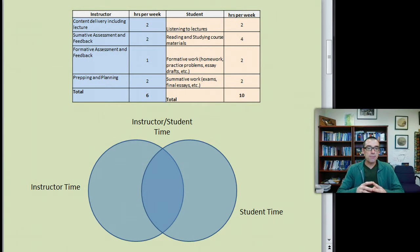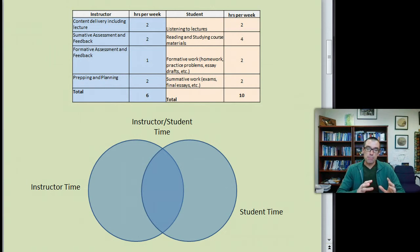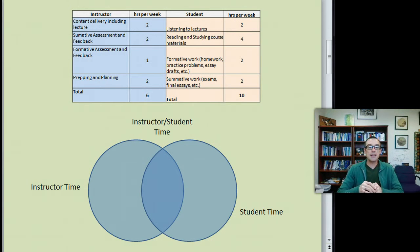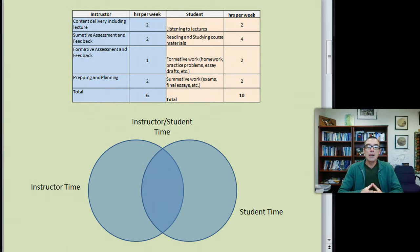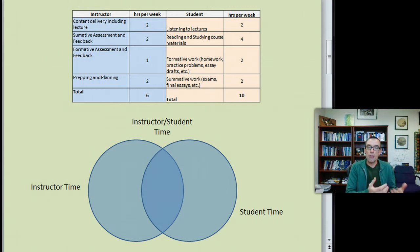At the top here I have a chart that's trying to get at what sorts of things instructors do in the teaching and learning context, and then what sorts of things students do in that context. I am assuming that instructors are thinking within the context of six hours for a three-credit class — that is how much time Front Range thinks about in terms of workload.